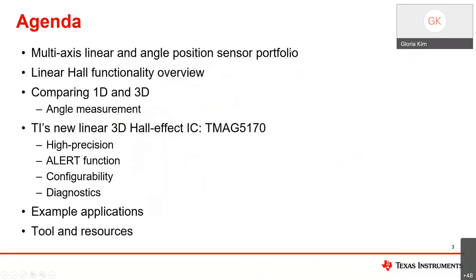Here's a quick agenda of our discussion. We'll start with an overview of our multi-axis linear and angle position sensing portfolio, then do a quick recap on the functionality of a linear hall effect sensor, followed by a comparison between a one-dimensional linear sensor versus a three-dimensional. We'll go through the device details of the new TMAG 5170, walk through some example applications, and finish off with tools and resources available on ti.com.